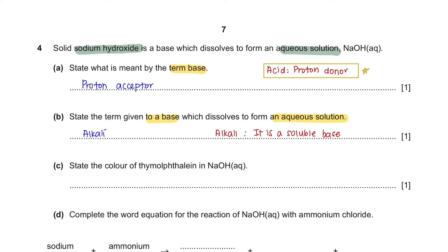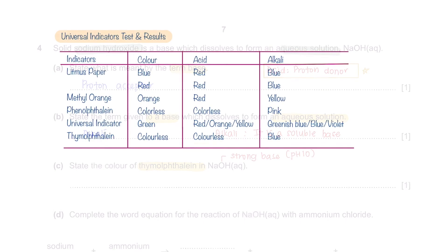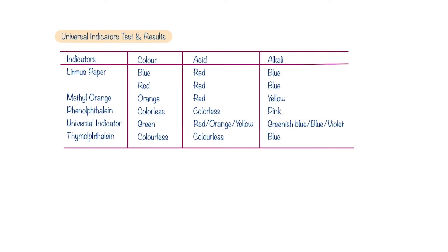Question C: State the color of thymolphthalein in NaOH. Sodium hydroxide is a strong base with approximately a pH of 10. There are several indicators that you should know the change of color when they are added to acidic or alkaline solutions.